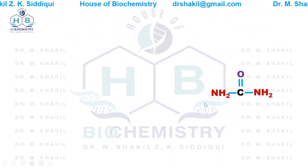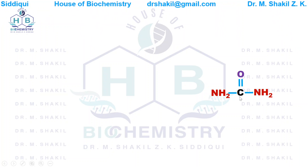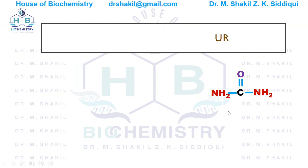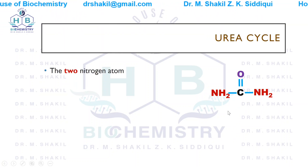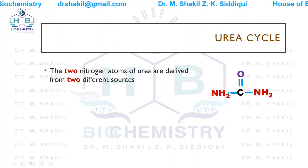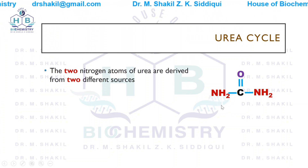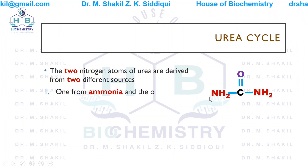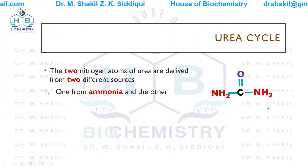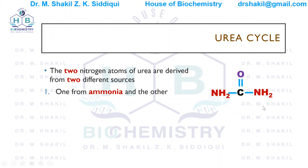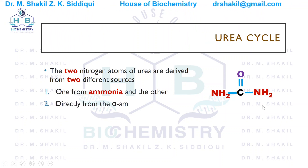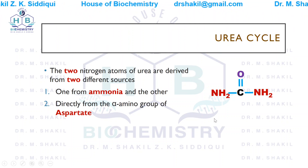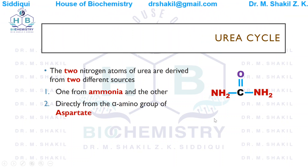Urea is composed of two amino groups linked with a carbonyl group. The two nitrogen atoms of urea have two different sources. One source is ammonia, and the other source, as discussed in the previous lecture, is from aspartate or aspartic acid — specifically from the alpha amino group of aspartic acid.